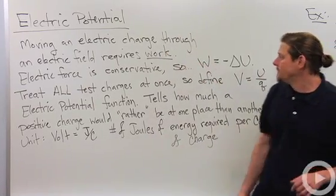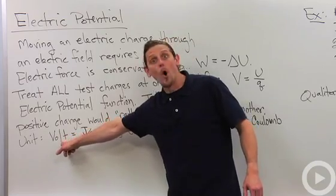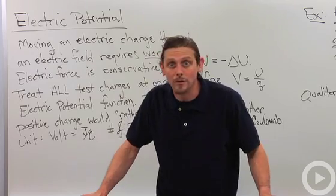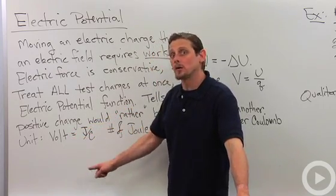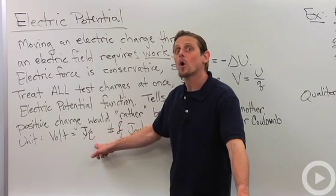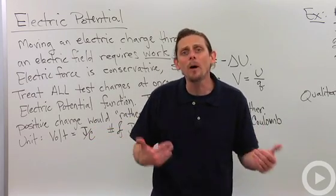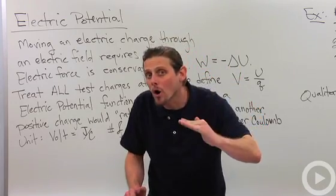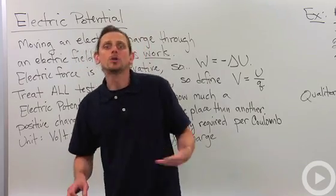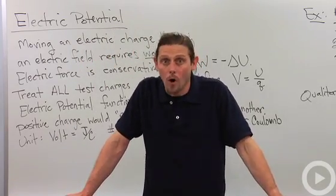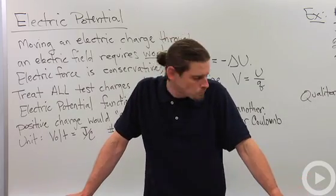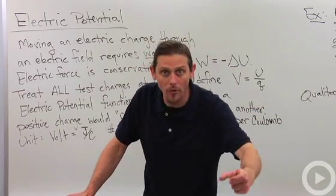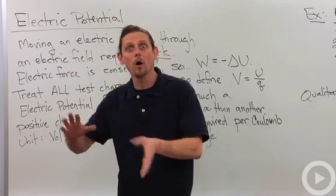The unit of electric potential is the volt — the same volt you know from batteries. One volt is equal to one joule per coulomb. It tells us how much energy is required for a charge to be at a certain location per coulomb of charge. So if I've got an electric potential of three volts, it will cost twice as much energy to put double the charge there — joules per coulomb.